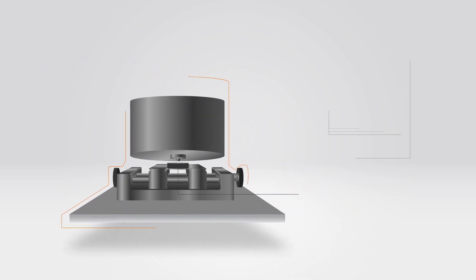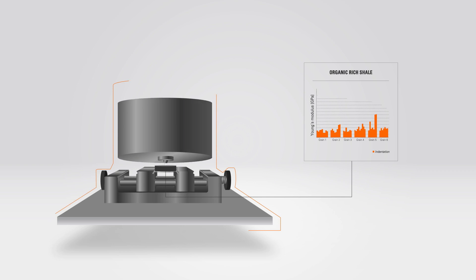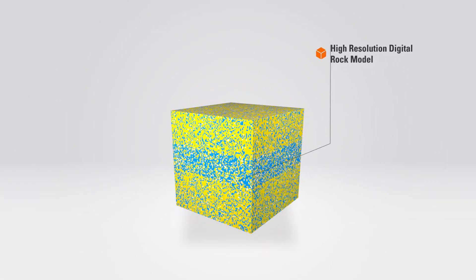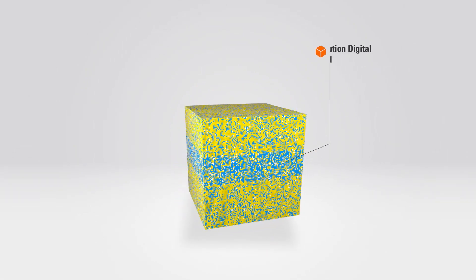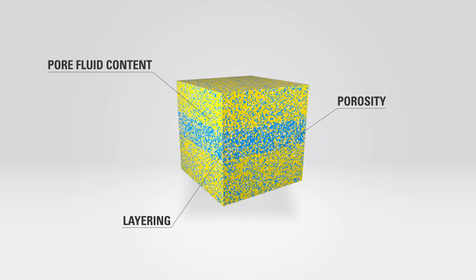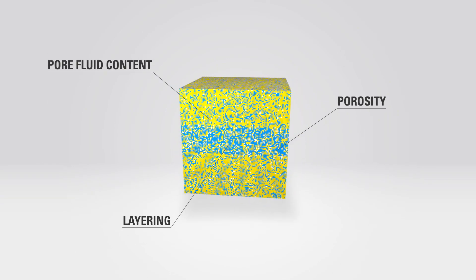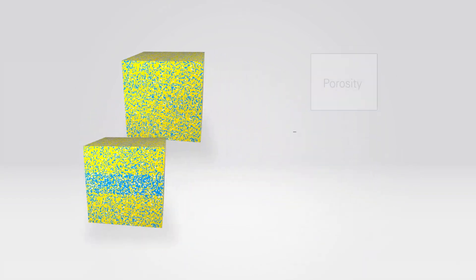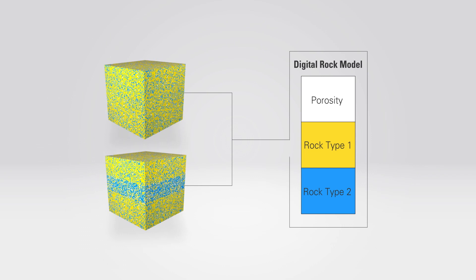The results from the mineralogical analysis and the mechanical properties measured by the nano-indentation of the grains are integrated into a high-resolution digital rock model. The model also integrates porosity, layering, and pore fluid content derived from wireline and mud logs. The result is a digital model of a consolidated rock sample derived from the subsurface.